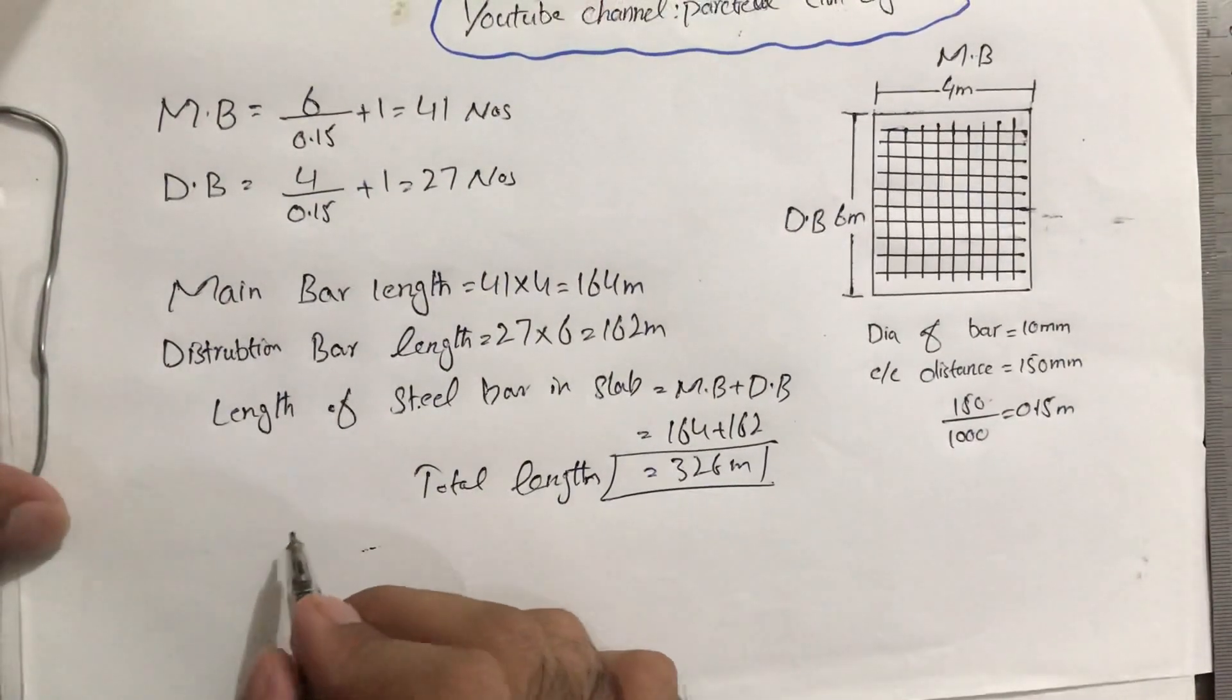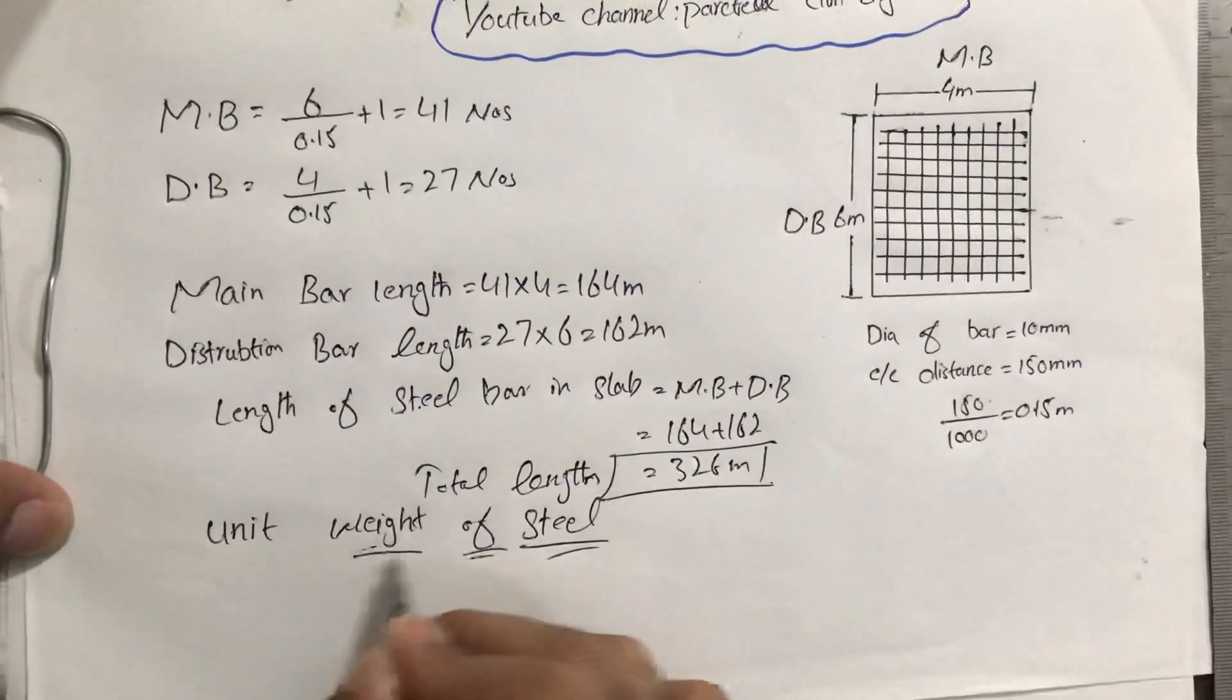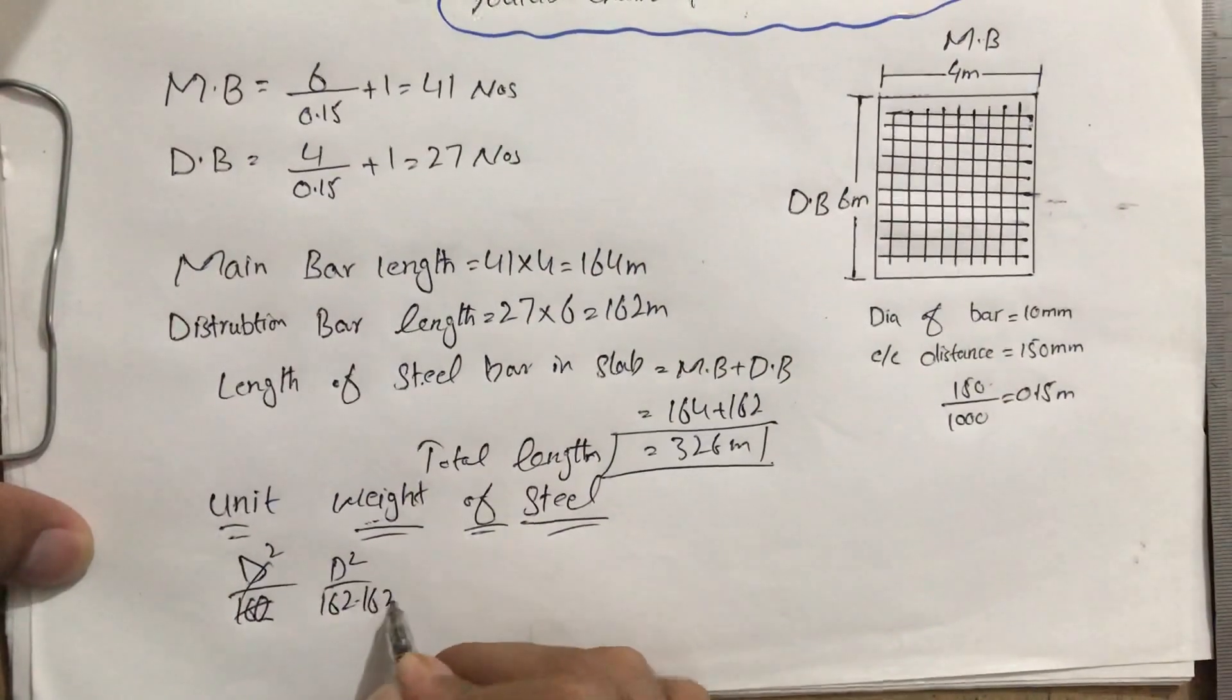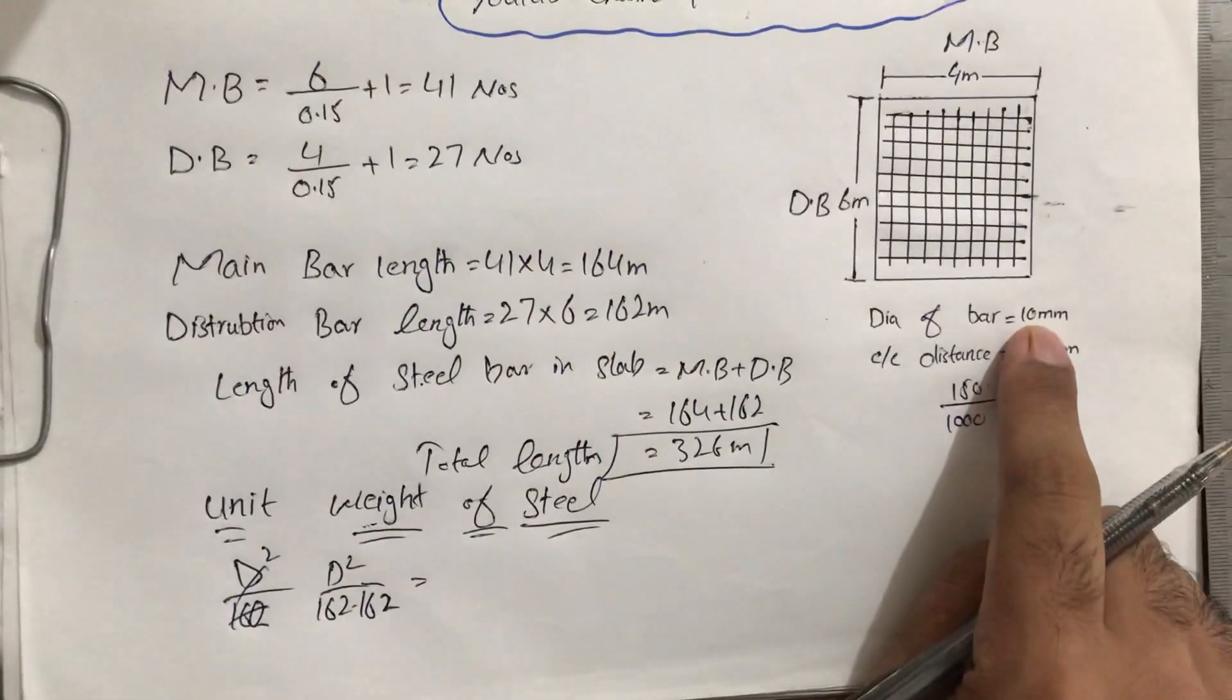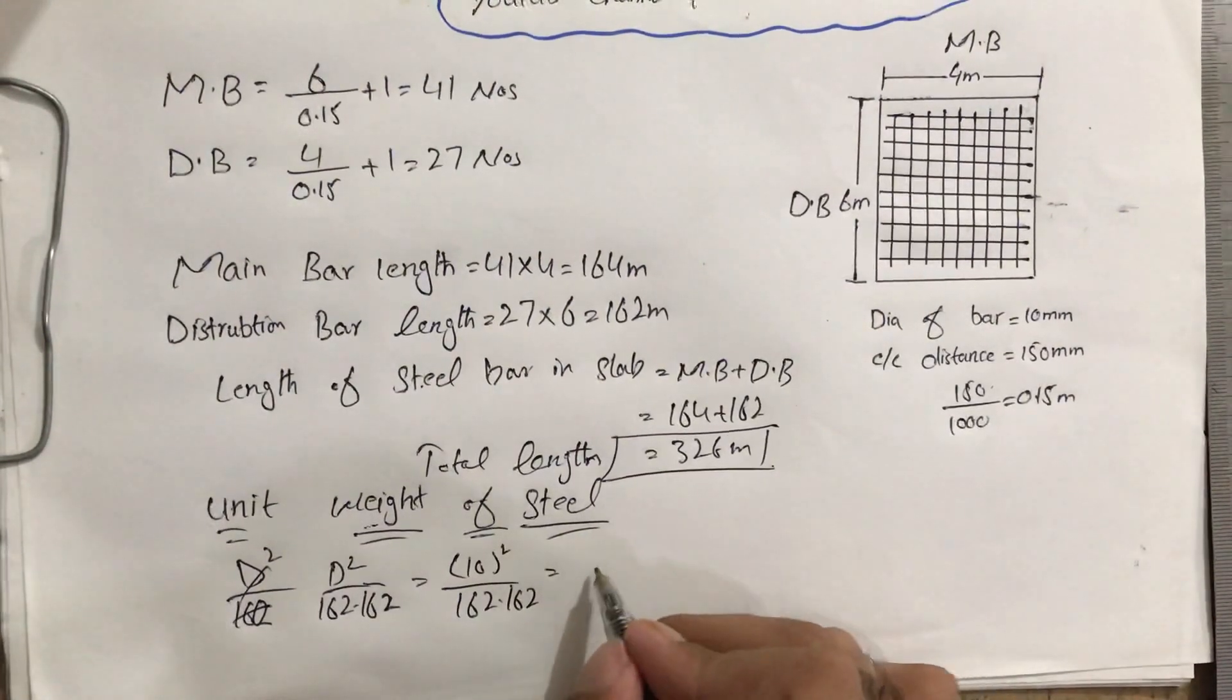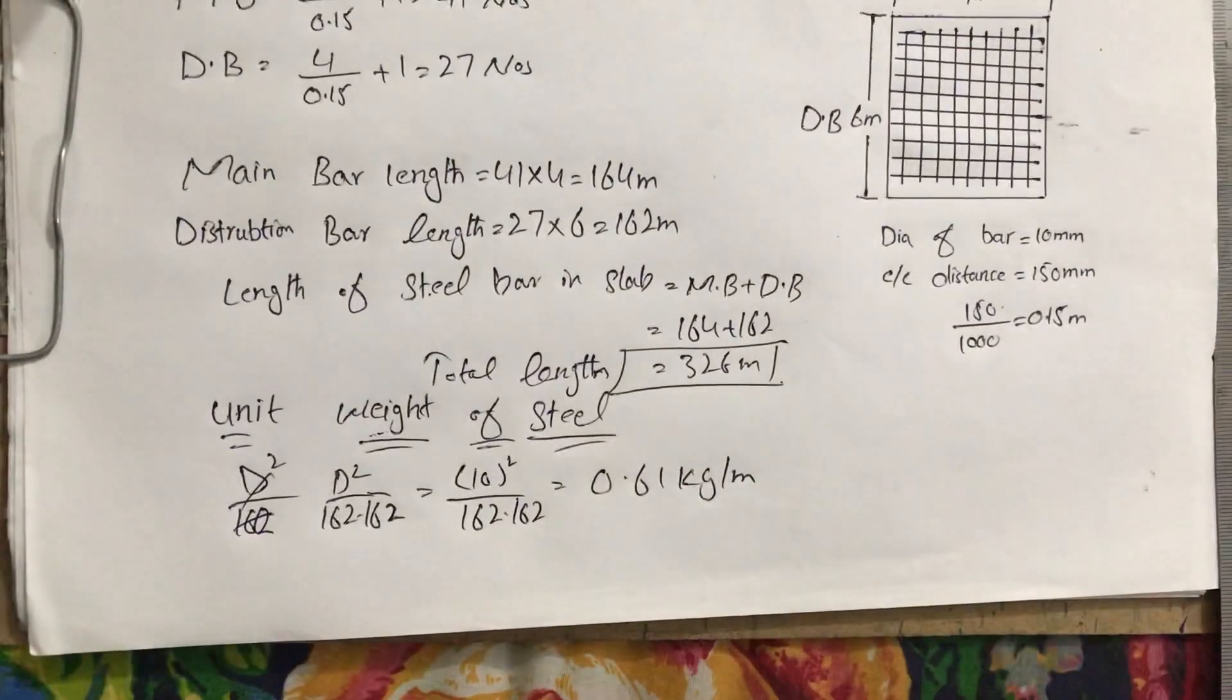Now we have to find unit weight of steel. For this we have formula: d squared divided by 162. D is diameter of bar, which is 10 mm, which we suppose. 10 squared divided by 162, when we calculate it, we get 0.61 kg per meter.